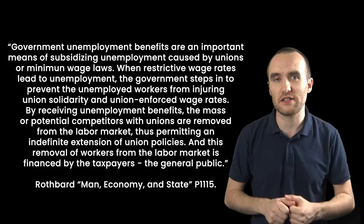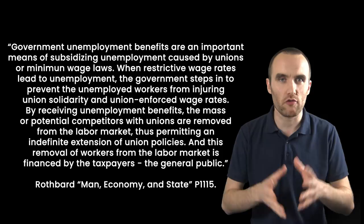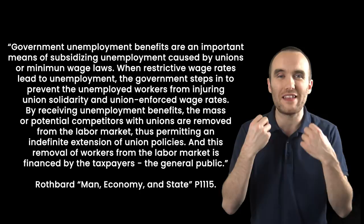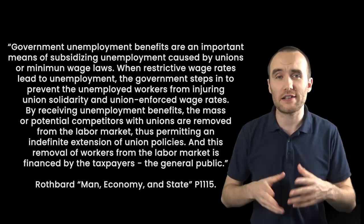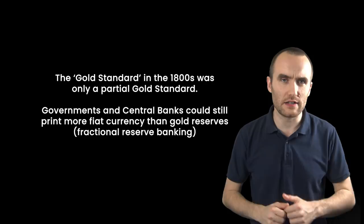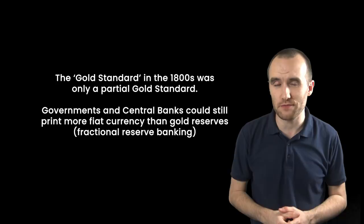Bottom line: all these measures that the government takes to try and cure the crisis are actually counterproductive — they deepen the recession. Of course, they sound great at first: look how great we are, we're giving currency to the unemployed. But the reality is that these policies don't work and they make things worse. What the government can do is not create the recession in the first place. They need to not print currency at all. We need a stable money system — not like the partial gold standard in the 1800s, but a fully 100% backed gold standard. This will prevent governments or banks from inflating the currency supply and thus causing the recession.